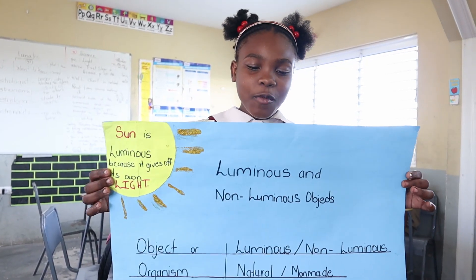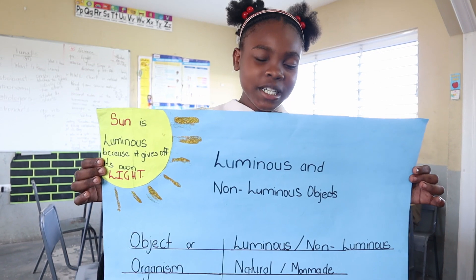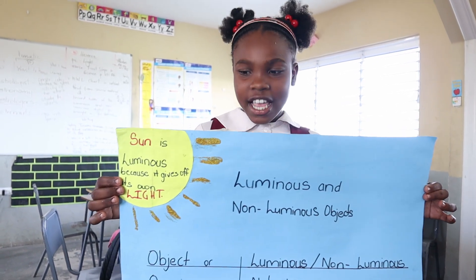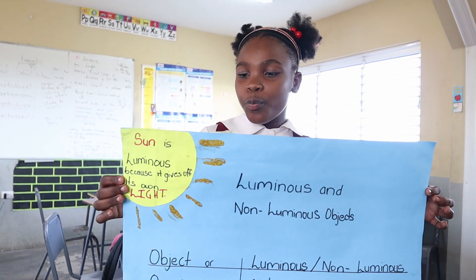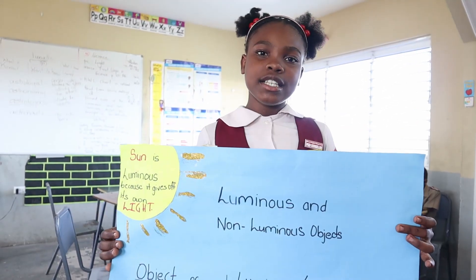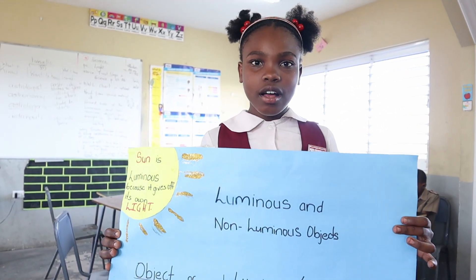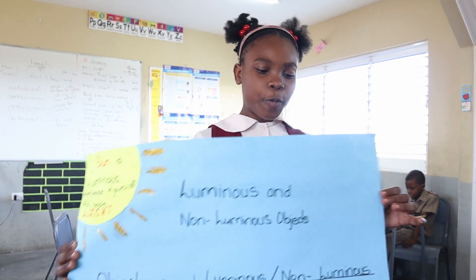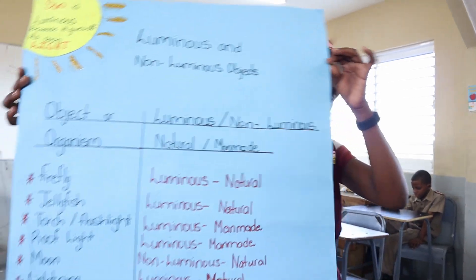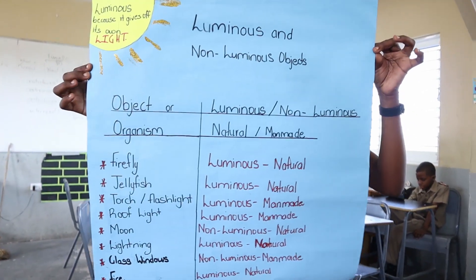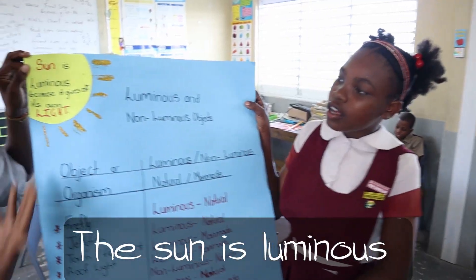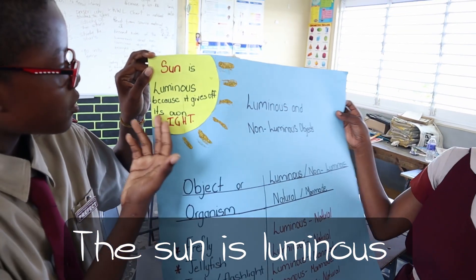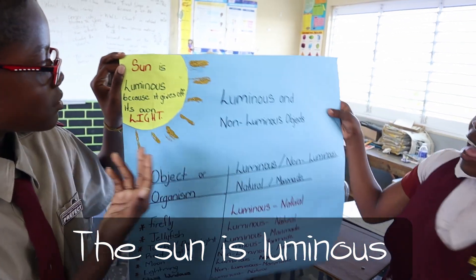In class today we looked at luminous and non-luminous objects. In our group we created this chart on luminous and non-luminous objects. It's luminous because it gives off its own light.